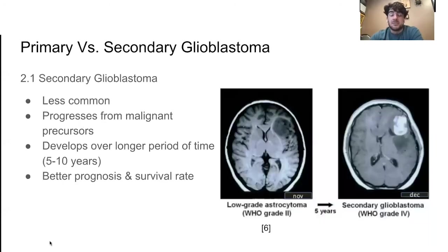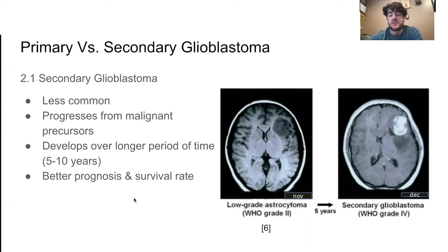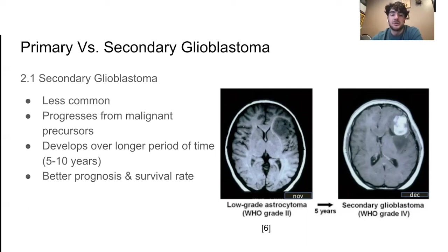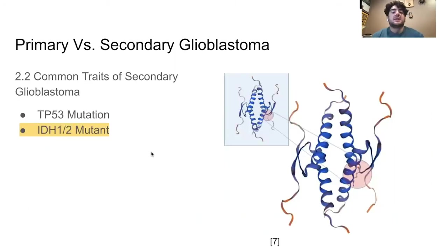The second type is secondary glioblastoma. It is less common and progresses from a lower-grade glioma or malignant precursor, such as a grade two astrocytoma. It develops over a longer period of time — five to ten years — and carries a better prognosis and survival rate. It is not as aggressive as primary glioblastoma, but still more aggressive than the lower-grade gliomas from which it progressed. The mechanism of development for secondary glioblastoma is better understood than primary glioblastoma, but there still remains a lot of gray area.